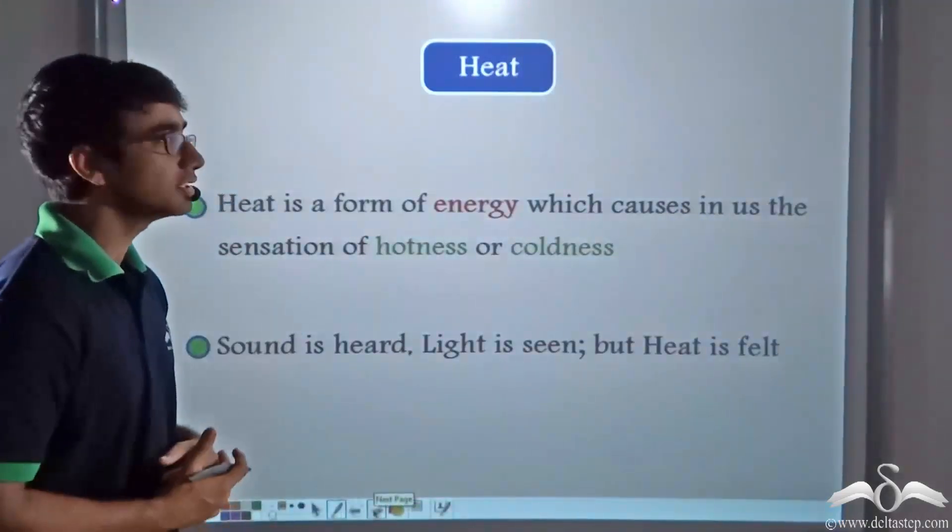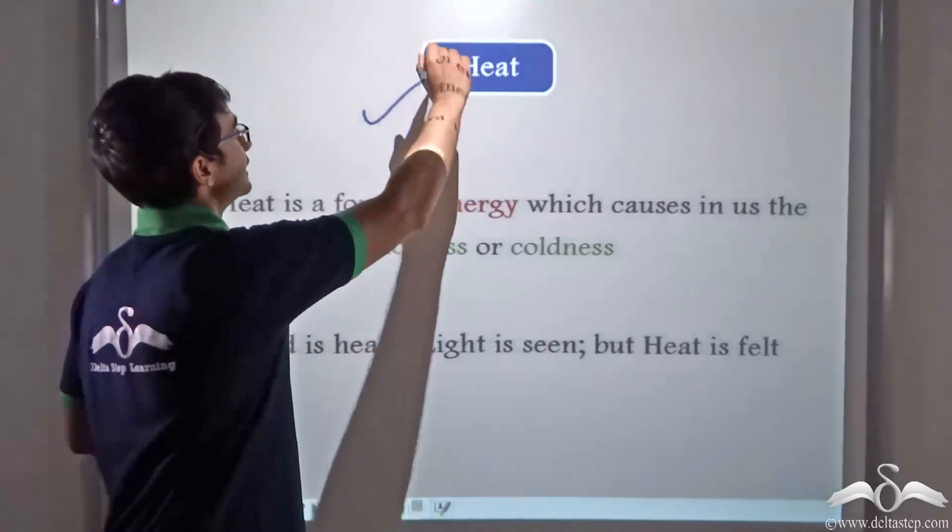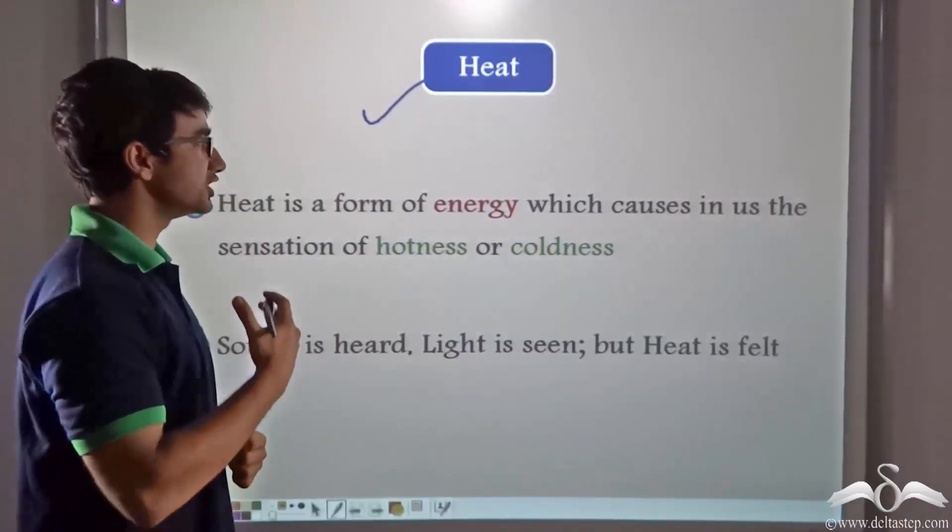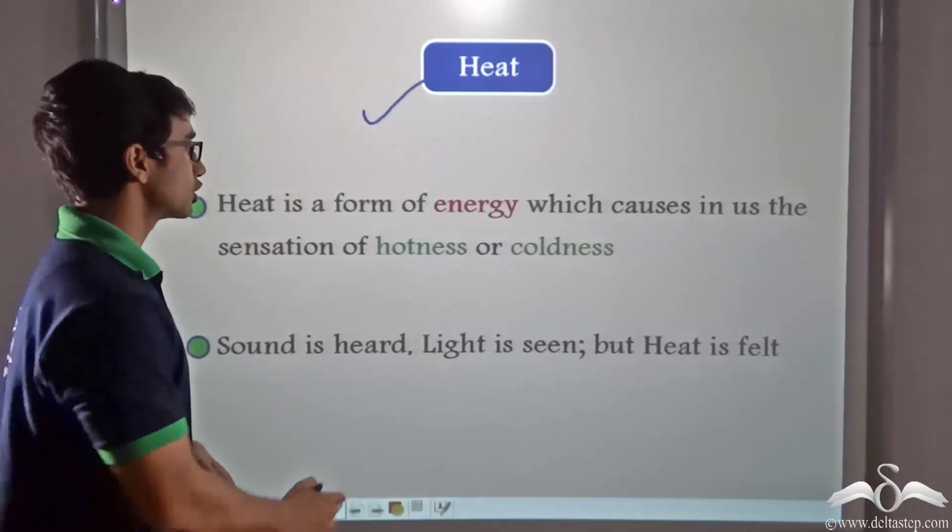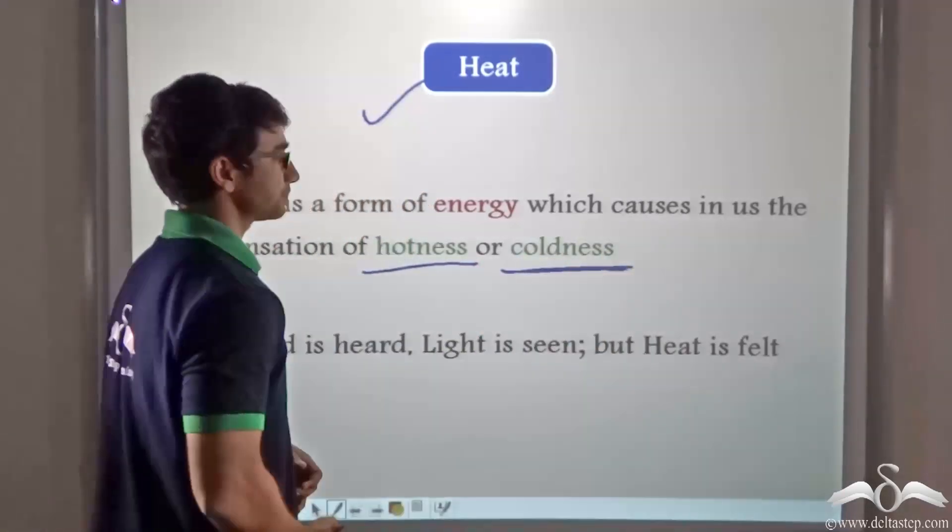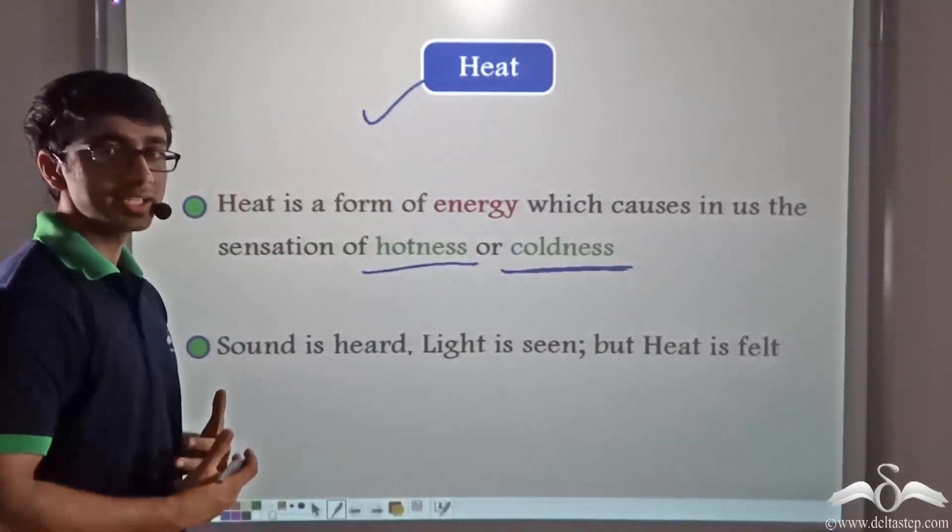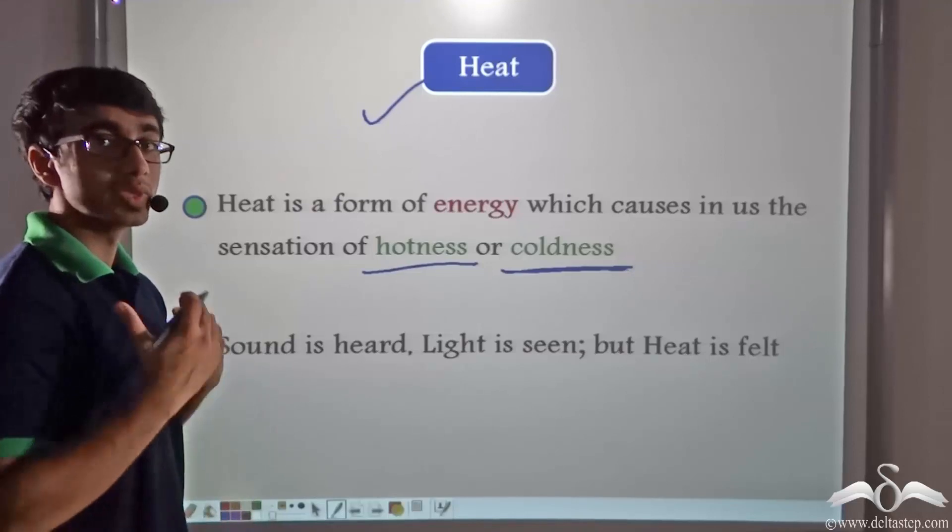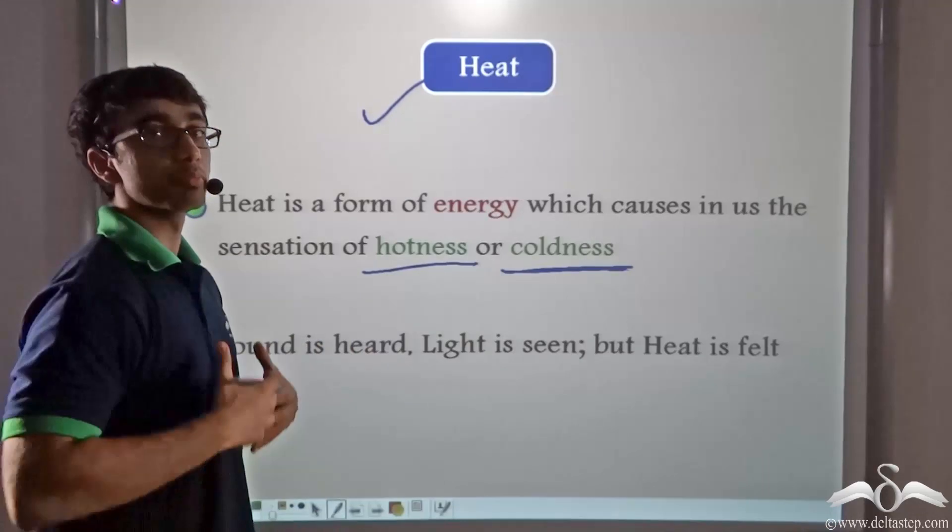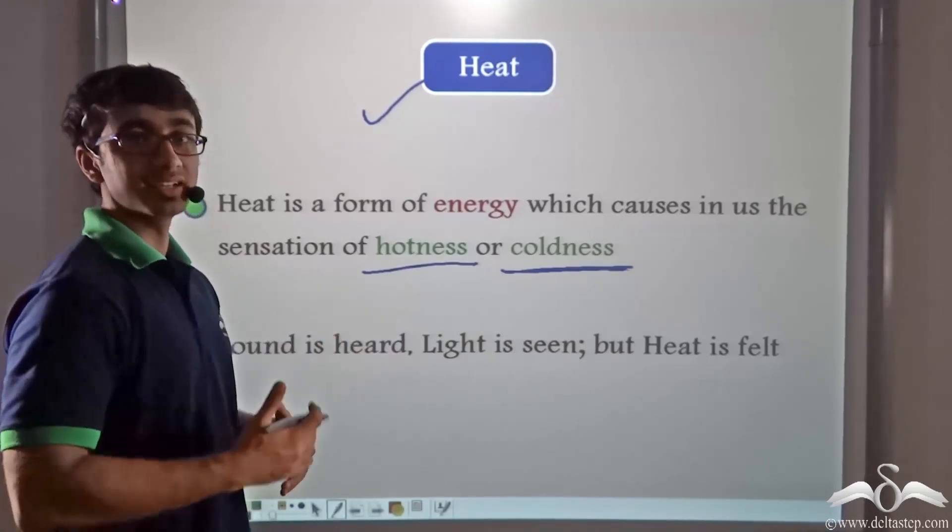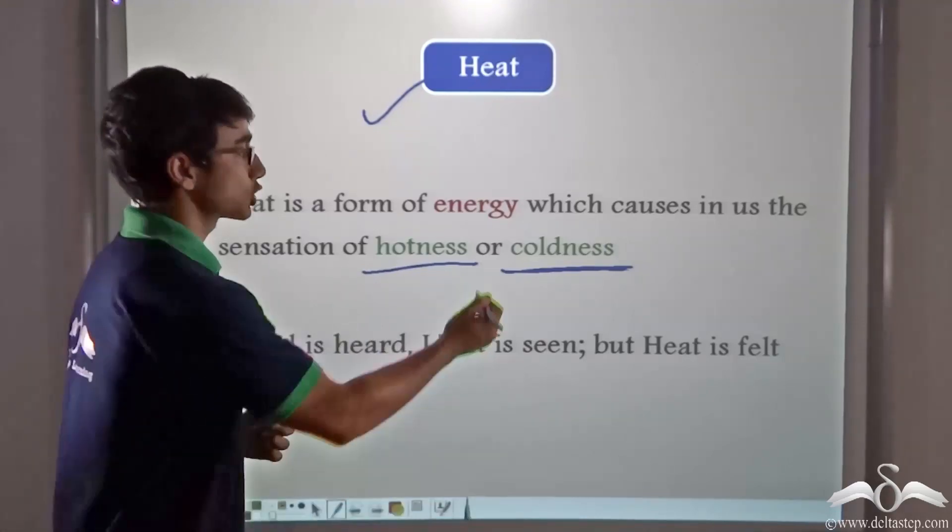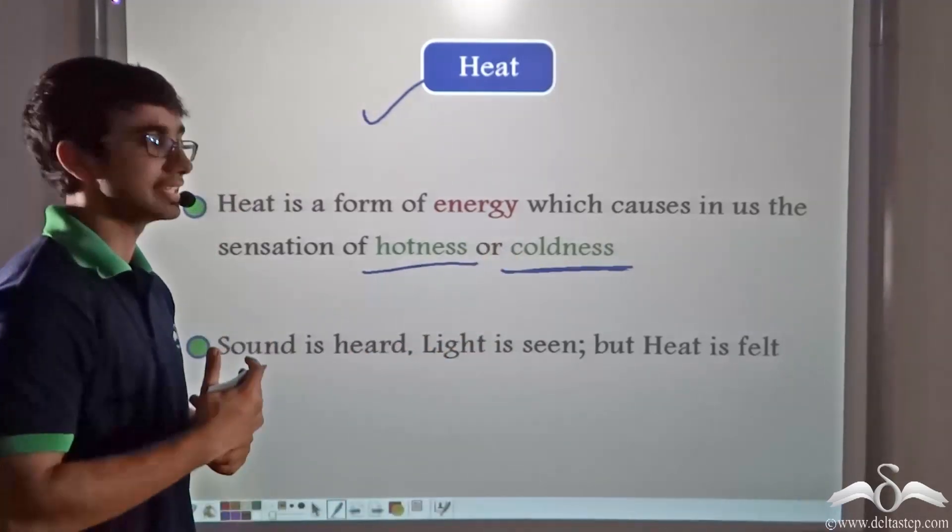This can be defined as a quantity known as heat. So what is heat? Heat is a form of energy which causes in us the sensation of hotness or coldness. When a body is hot or cold, we can determine that by the amount of heat it contains. When a body is more hot, it contains more heat, and when a body is less hot or cold, it contains less heat.